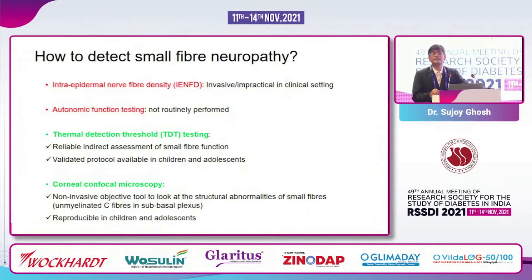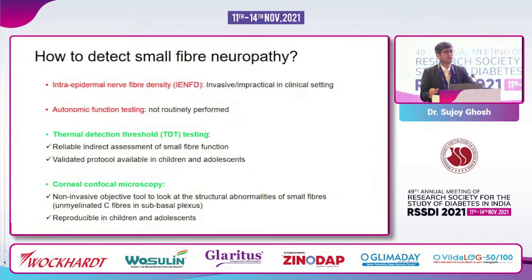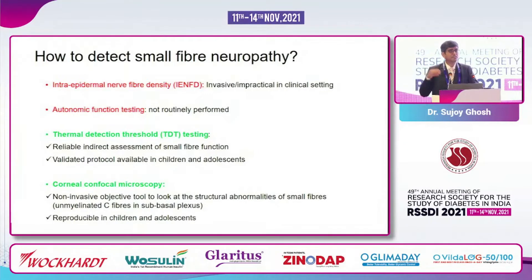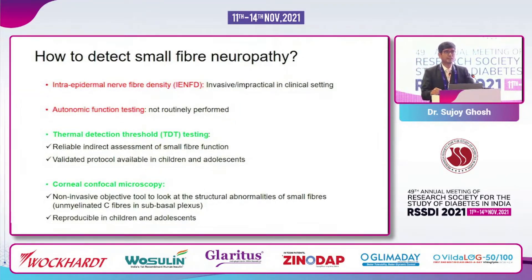How can you assess small fiber neuropathy? The first, thought to be the gold standard, is intra-epidermal nerve density — you do a skin biopsy and look at nerve density. Is that possible in clinical practice? No, because it's invasive and diabetes is a lifelong disease. If it is normal today, are you going to repeat it after a few months? Urine albumin-creatinine ratio you can do 10 times, but skin biopsy is not easily feasible.